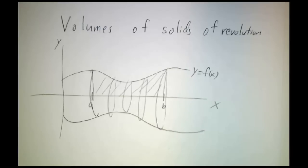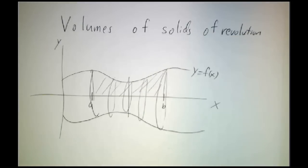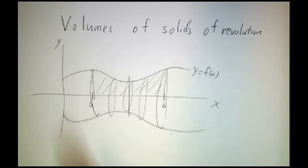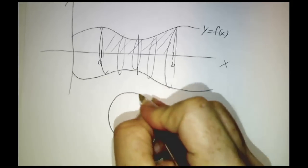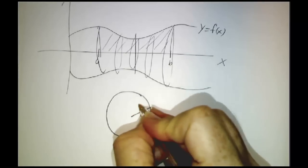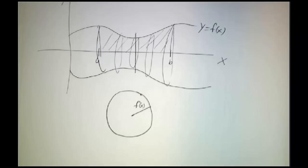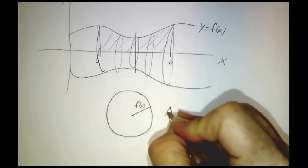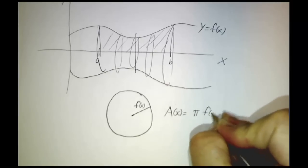So now, if you have a solid of revolution, whenever you cut it, whenever you just cut a slice, what you're going to find is if you take that slice and you lay it flat, you'll find that it is a perfect circle. And the radius of that circle is f(x). So that means that our area is pi times f(x) squared.